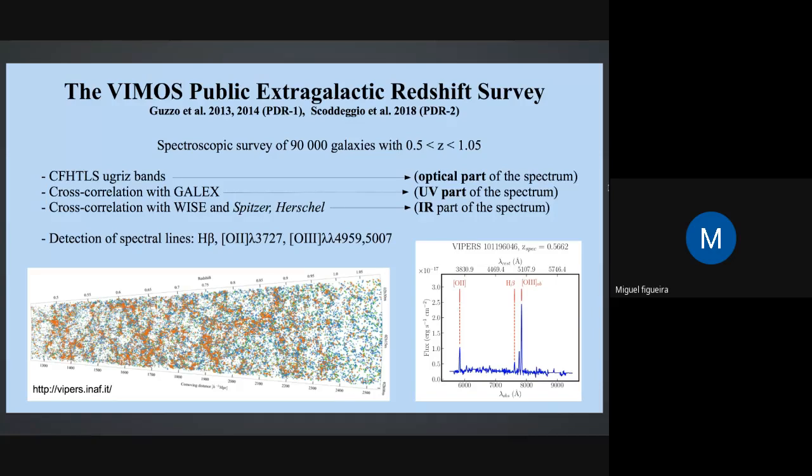Since this is a spectroscopic survey, we have detection of some lines - four lines: H-beta, O2, and two O3 lines. On the right plot, you can see one example of a galaxy at redshift 0.56 with all these lines detected.